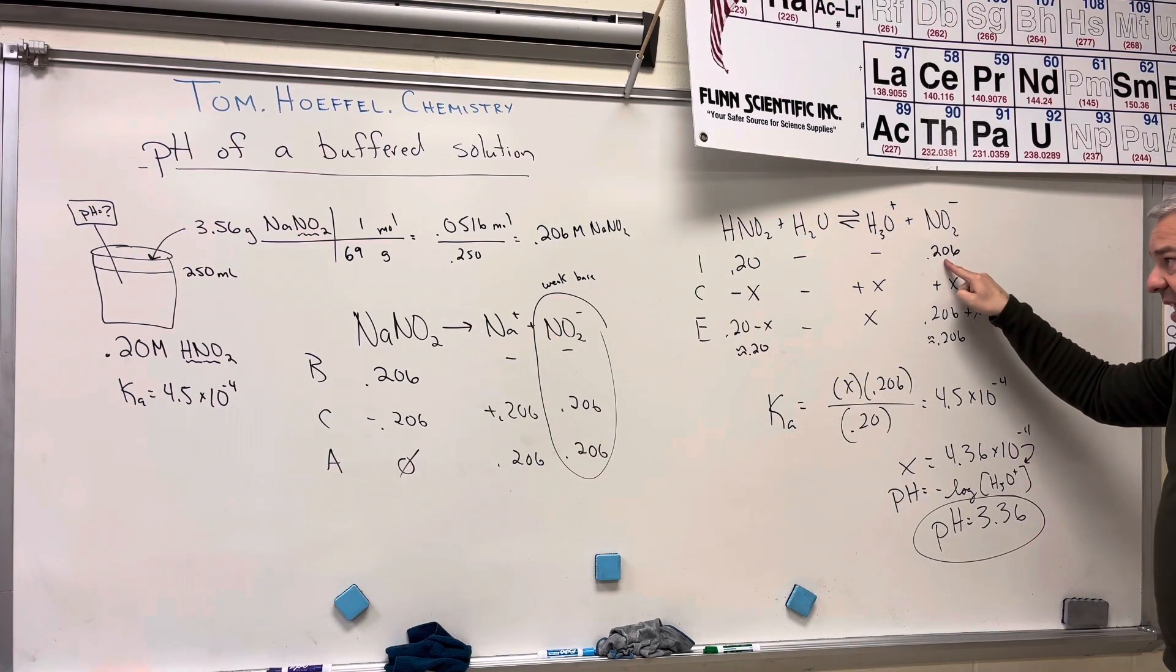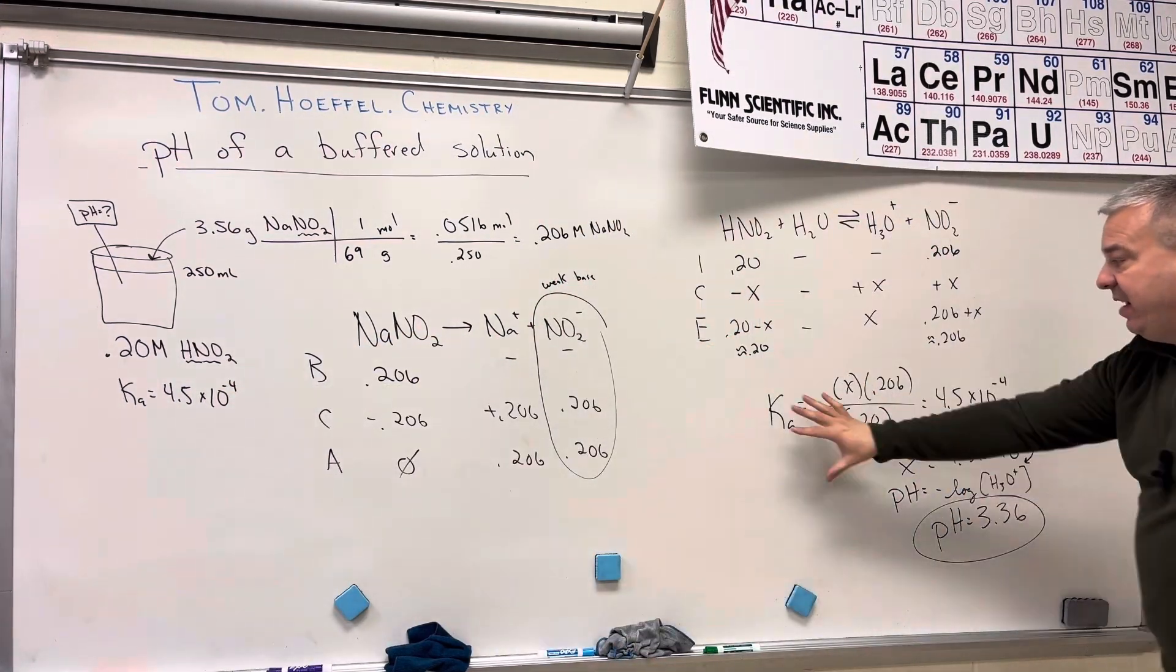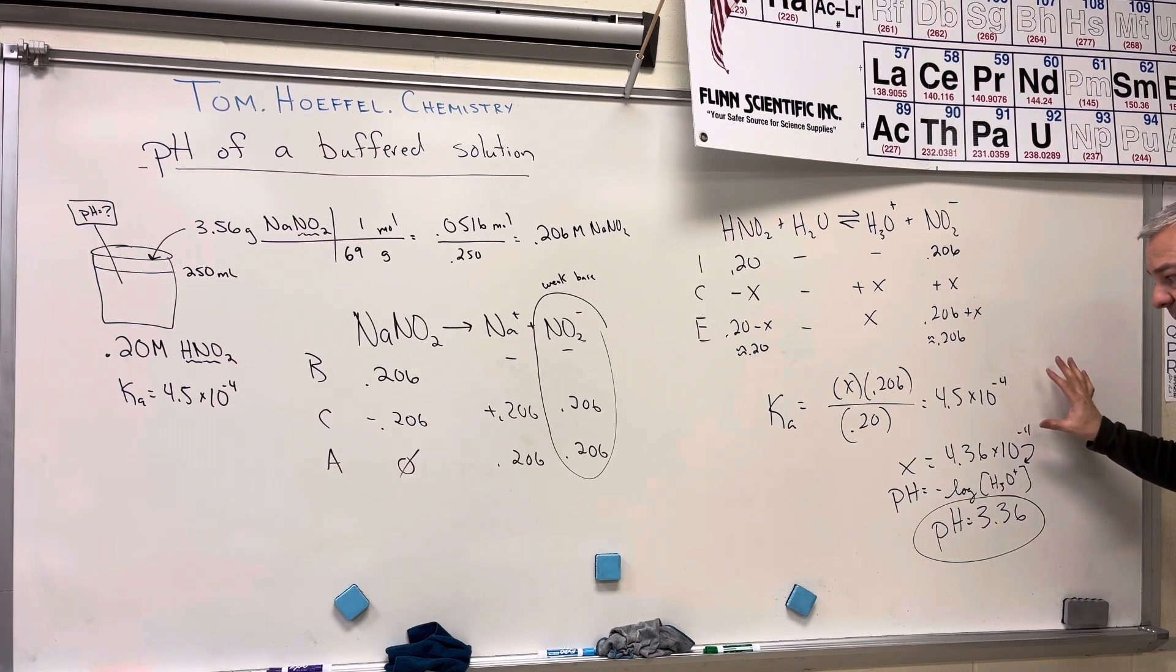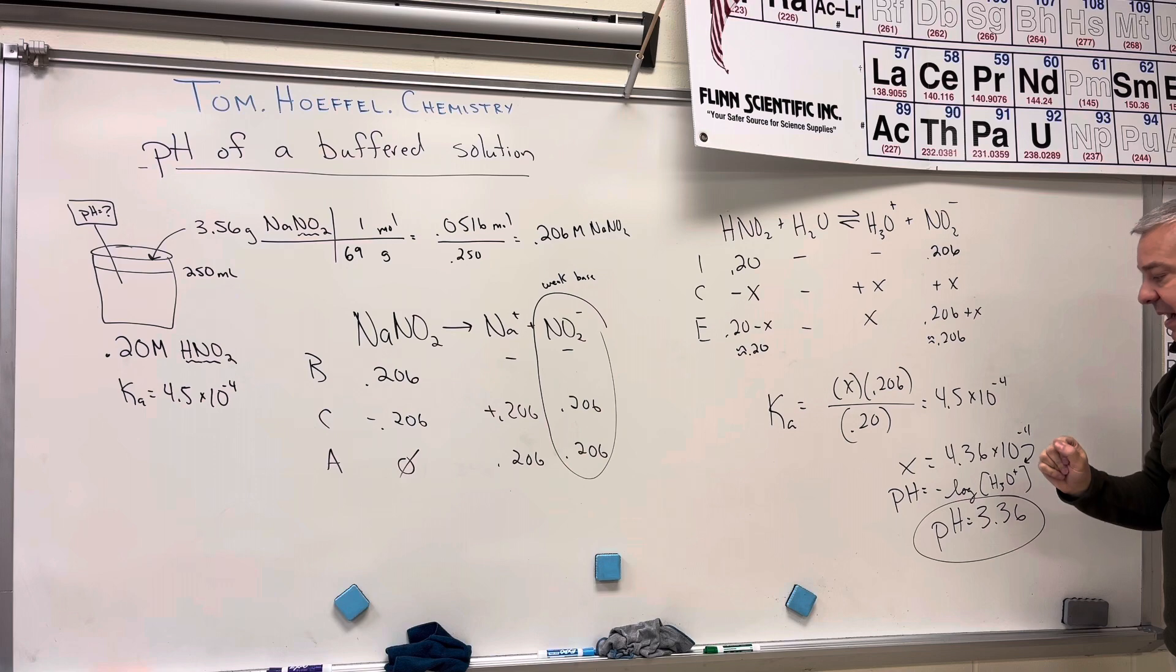So I plug that in with the molarity of the acid. I set up my ice chart. I set everything equal to the equilibrium expression. Solve for X, which is equal to the hydronium ions, and take the negative log of that in order to get pH.